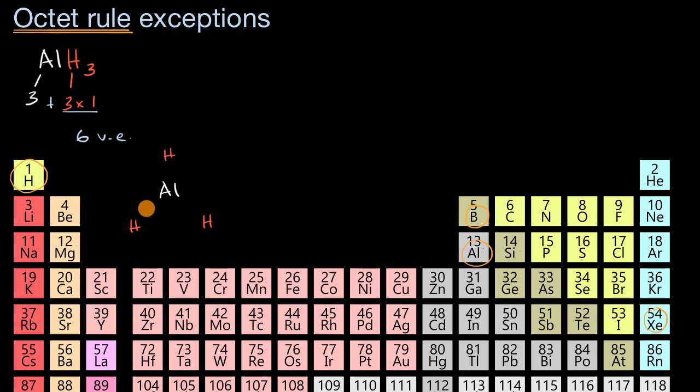And then let's put some covalent bonds in here. How many valence electrons have we now accounted for? This is two in this covalent bond, another two gets us to four, another two gets us to six.